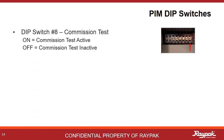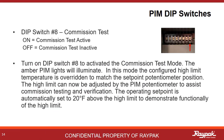Dip switch number eight controls the commission test. This is a handy tool for demonstrating that the high limit is working properly. With dip switch number eight on, the boiler will run to 20 degrees higher than the high limit to force a high limit shutdown. Once complete, power off the boiler, turn off dip switch number eight, then turn the boiler on and clear the fault.